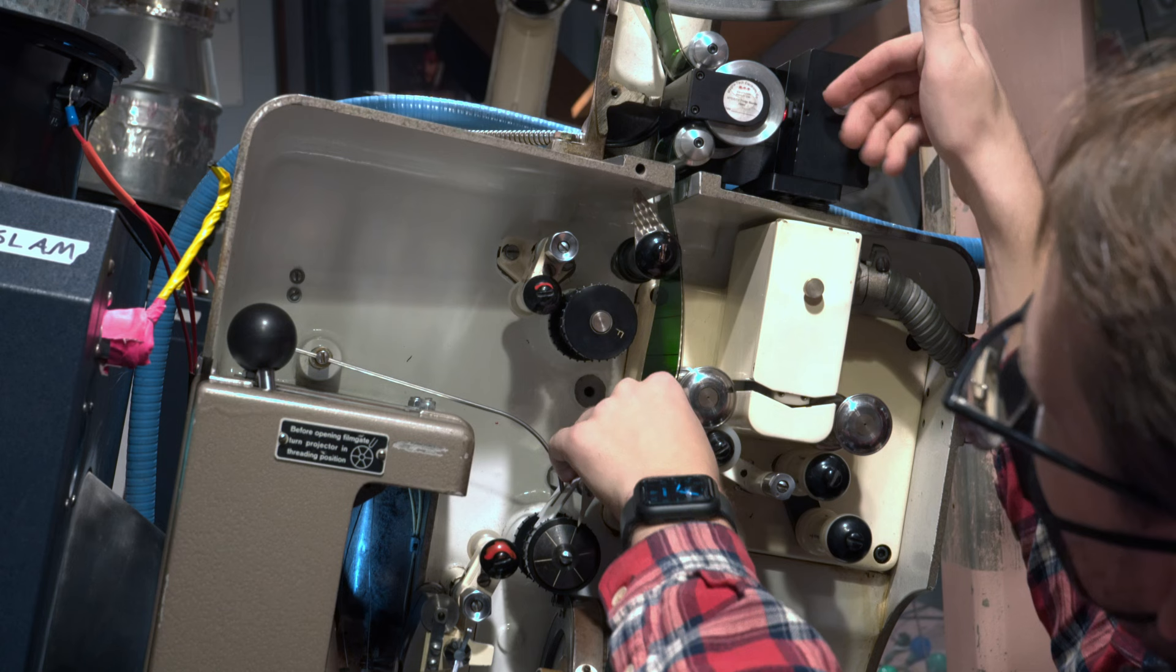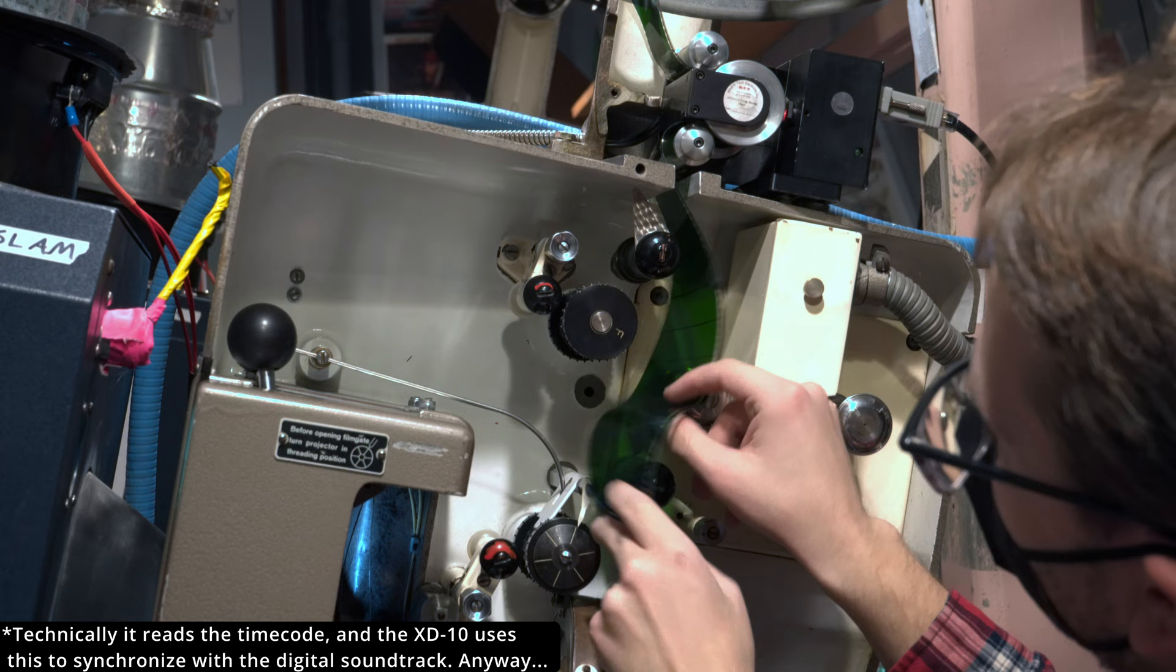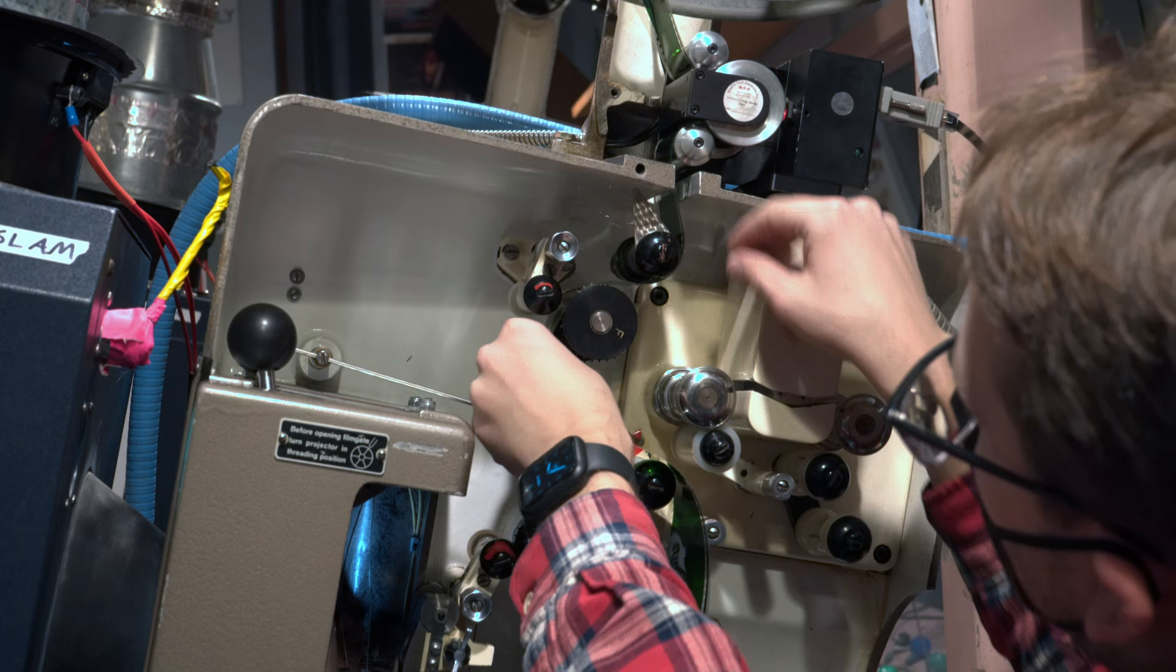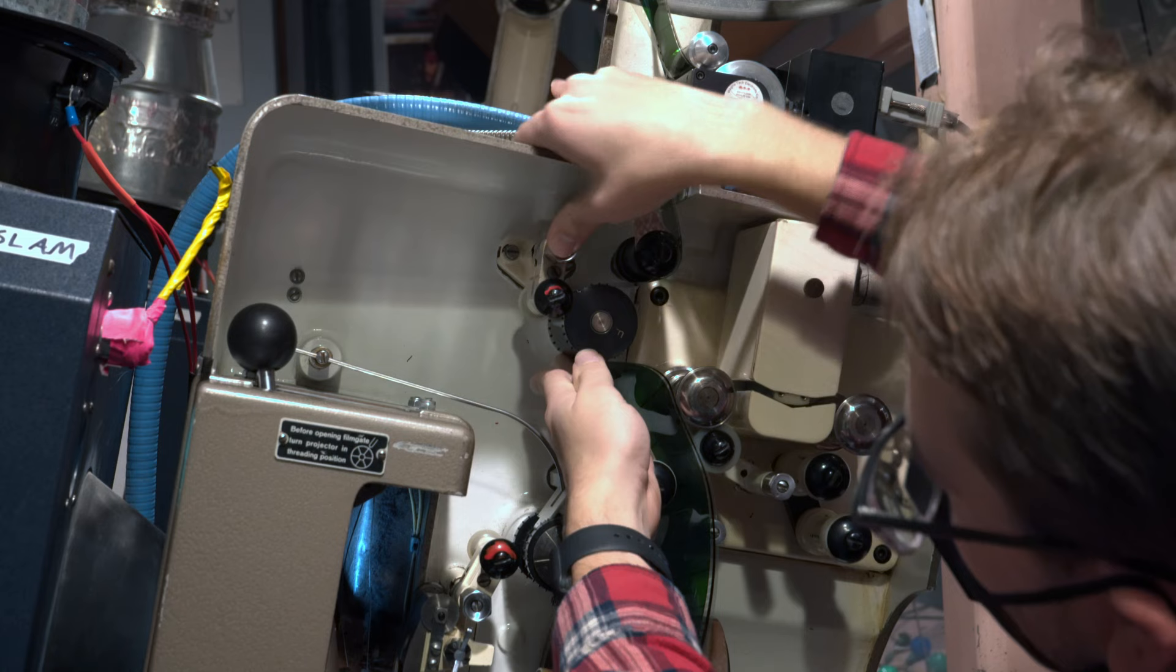The next thing we're going to need to go through is the first constant motion sprocket here. We need to go through this one primarily because 70 is very large and it needs the extra help to pull it. So we pull it nice and tight, make sure it's sitting on the sprockets. You can feel that by just feeling the teeth with your finger. Looks good. Close it. Now it's locked in.